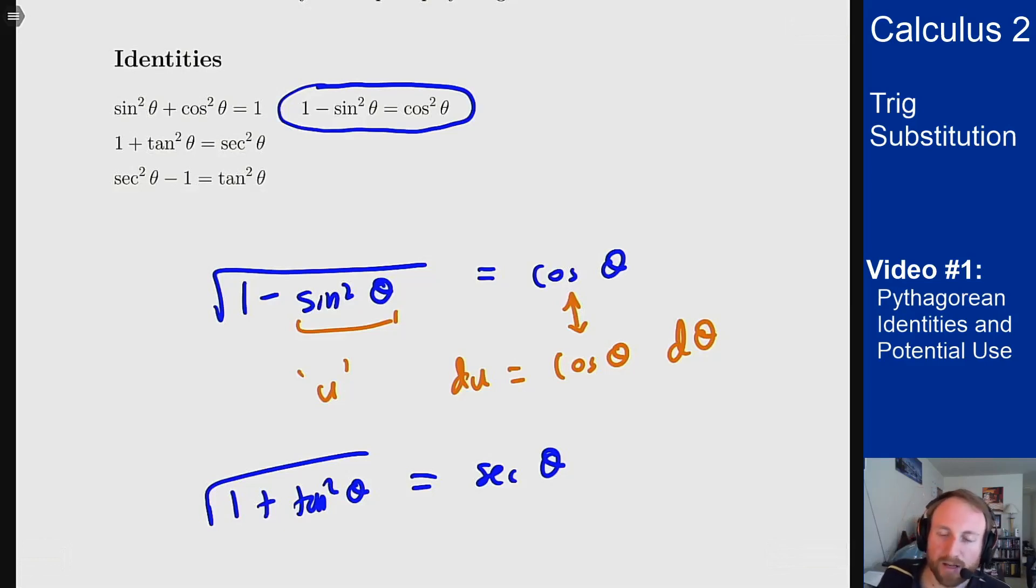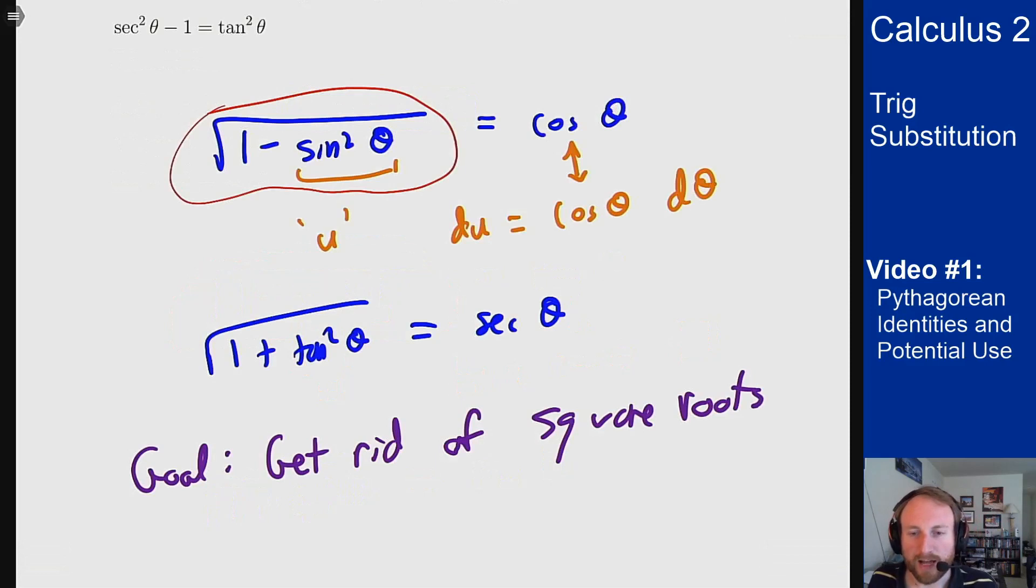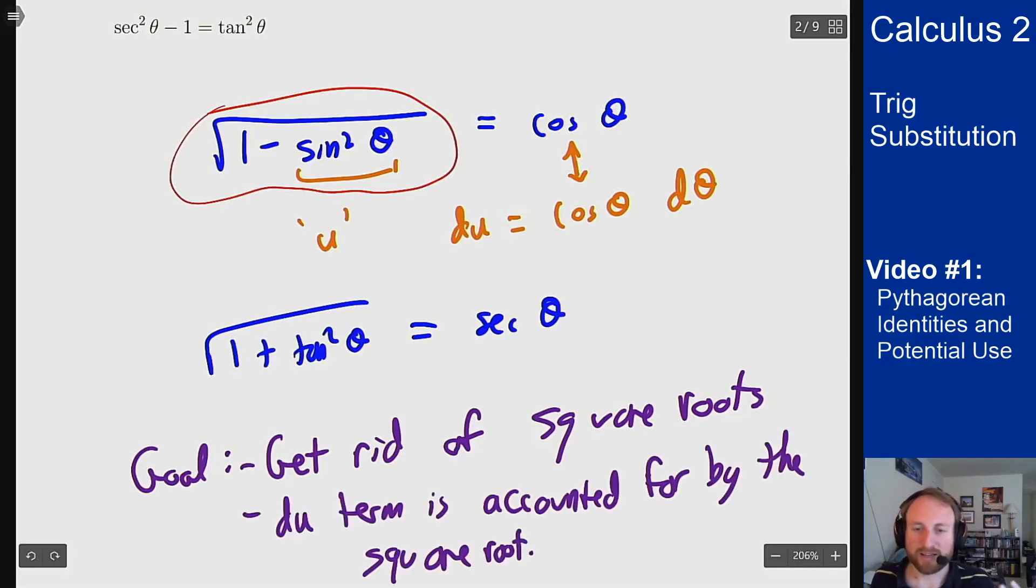And on the last one, if I have a secant squared minus 1 square root, that gives me a tangent, and the derivative of secant is secant tangent, so the tangents will play well nicely. The secant will stay on its own, but the tangent will work well there as well. So the idea is, by introducing this in an appropriate way, I can get some way of getting rid of square root things like this, but at the same time, not make it too much more complicated of an integral, because the du term that I get from that is accounted for by the square root. So it doesn't really explode the complexity of the integral if I set this up this way.